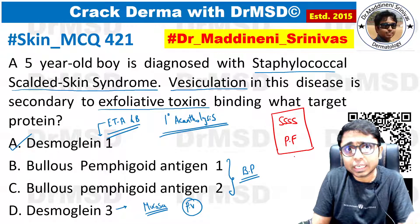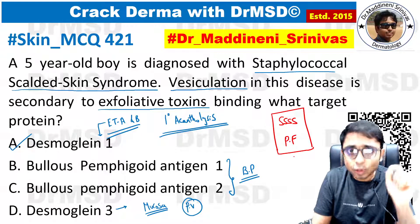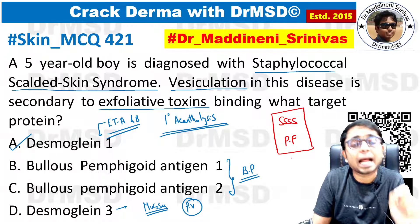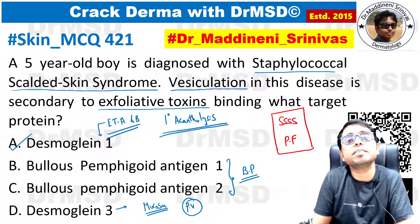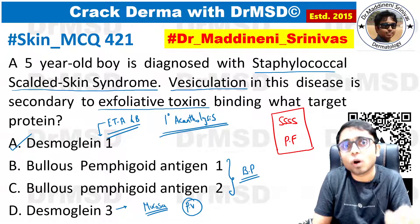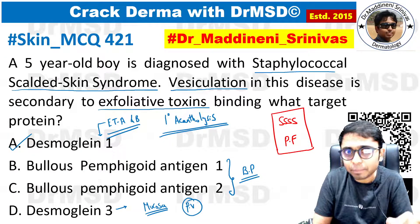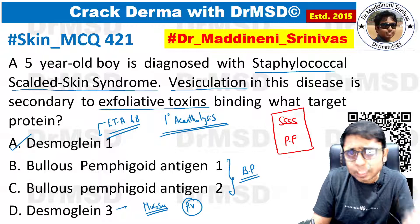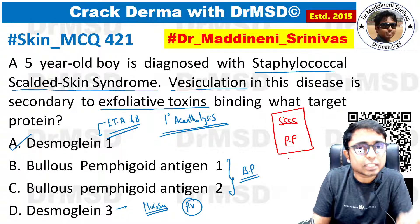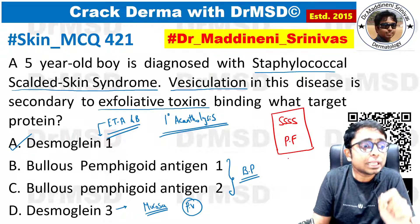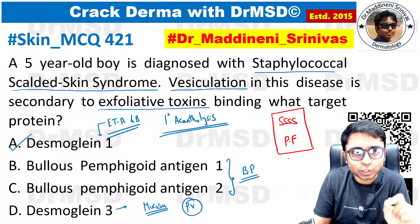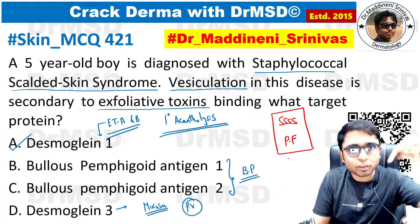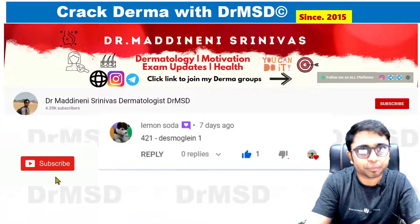One more question: which bacterial infection has Staphylococcus aureus as the causative organism, causing damage to desmoglein 1 and resulting in bullous lesions in the skin? If you know the answer, leave it in the comment section below.